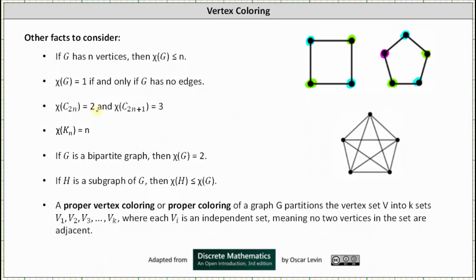Next, chi of K sub n equals n. K sub n is the complete graph where each vertex is adjacent to every other vertex in the graph. On the right, we have the graph of K5; the smallest number of colors we can use to get a proper coloring is five, because every vertex is adjacent to every other vertex. Next, if G is a bipartite graph, then chi of G is always equal to two. If H is a subgraph of G, then chi of H is less than or equal to chi of G — if chi of G equals five, the chromatic number of any subgraph would have to be less than or equal to five.